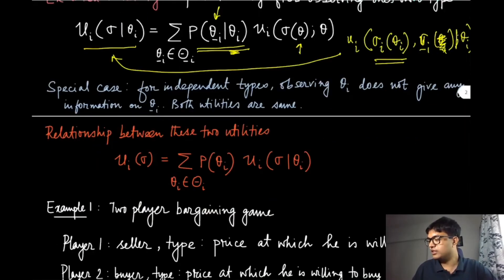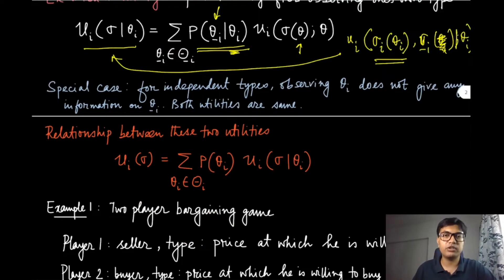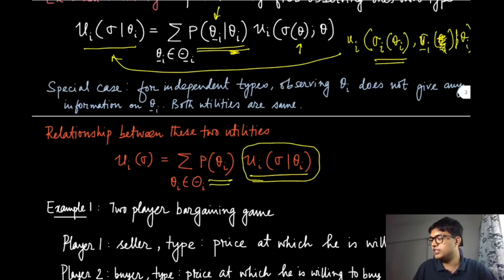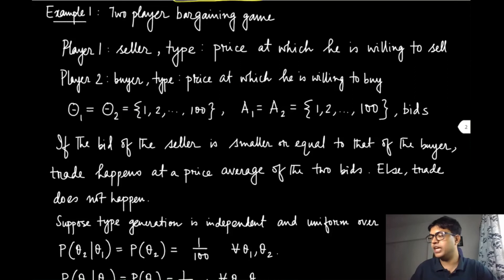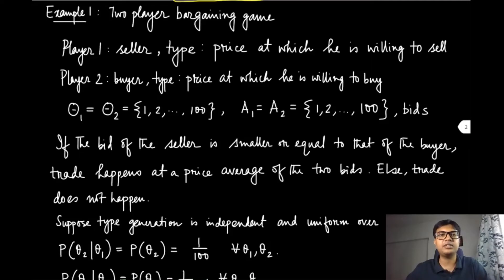The x interim state gives more information to the player. If you take the expectation of the x interim utility with respect to p(theta_i) over all types of player i, you obtain the ex ante utility. Now let us look at a few examples. In the first example, two players are bargaining over the sale of a single indivisible item — one player is a seller and one is a buyer.